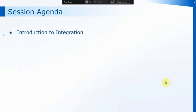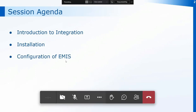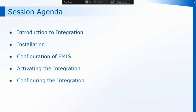Through the session today we're going to have a brief introduction to the integration and what it can do for you. We'll look at the installation on both System 1 and on EMIS, the configuration of EMIS which is an extra step we need to do just on the EMIS database, and then we'll look at activating and configuring the integration with both System 1 and EMIS. We'll finally look at the SurgeryConnect user configuration so that you can see what you'll need to change on the users so that they will then receive the pop-ups.